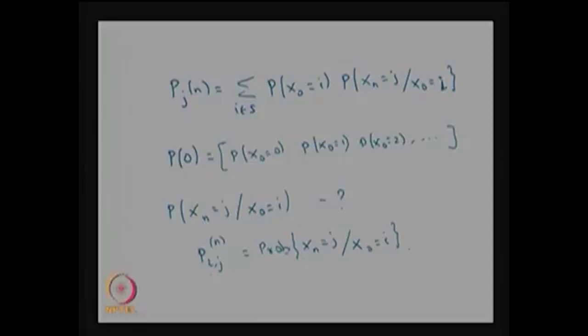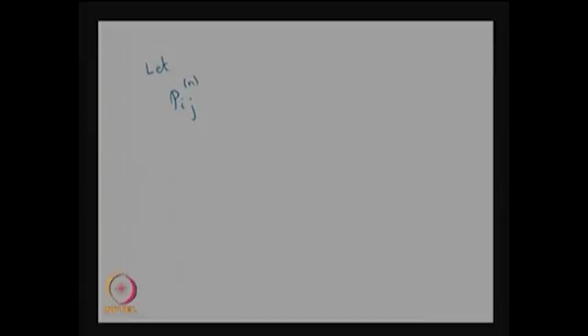We are now going to derive the Chapman-Kolmogorov equations for the time-homogenous discrete time Markov chain. Let p(i,j) superscript n be the probability that x_{m+n} takes value j given that x_m was i. Since the DTMC is time-homogenous, this is the transition probability of the system moving from state i to state j from the mth step to the (m+n)th step — the n-step transition probability matrix.